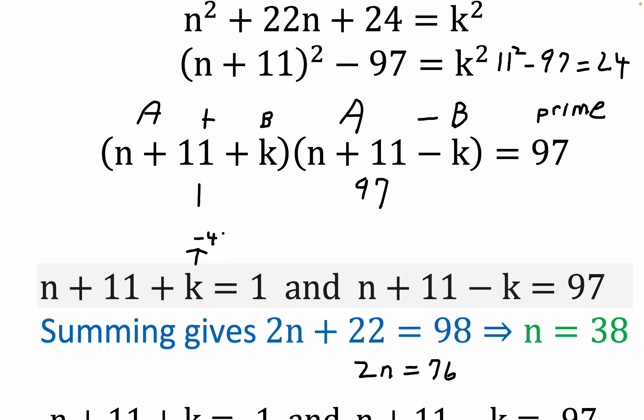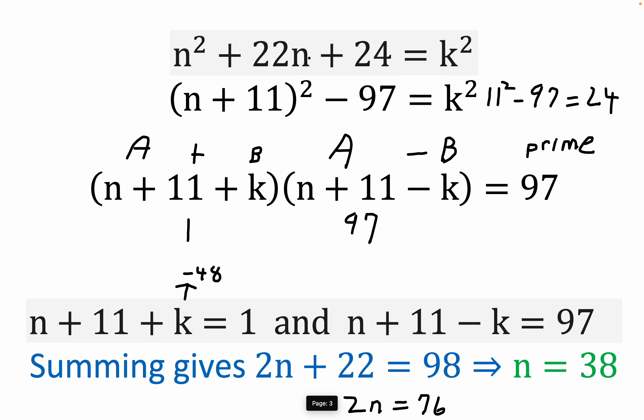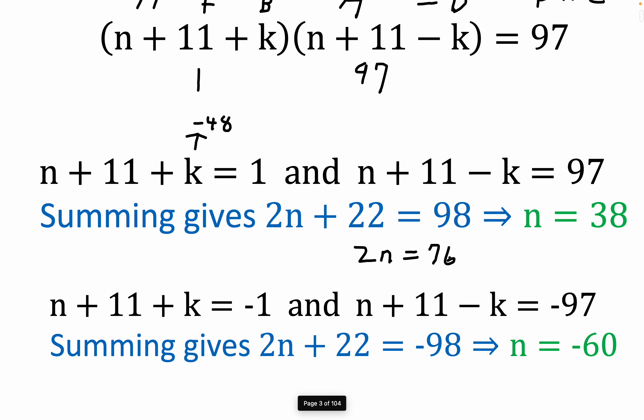K would be equal to minus 48, and you could take that value of K and check. You could put n equals 38 here, here, and here, and you could square 48, and you would see that you got the truth. You guys can do that arithmetic if you don't trust what I've done.